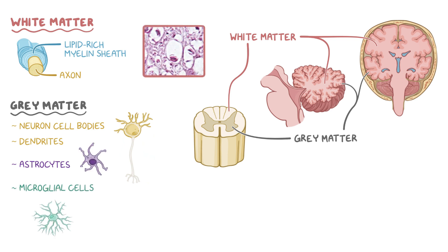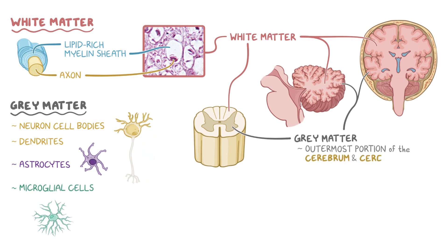In this high-power image of white matter from the spinal cord, the axons are surrounded by clear white space, which is where the myelin was present before the tissue was processed to create this slide. The outermost portion of the cerebrum and cerebellum consists of gray matter, with their white matter present mainly in the deeper regions of the brain.